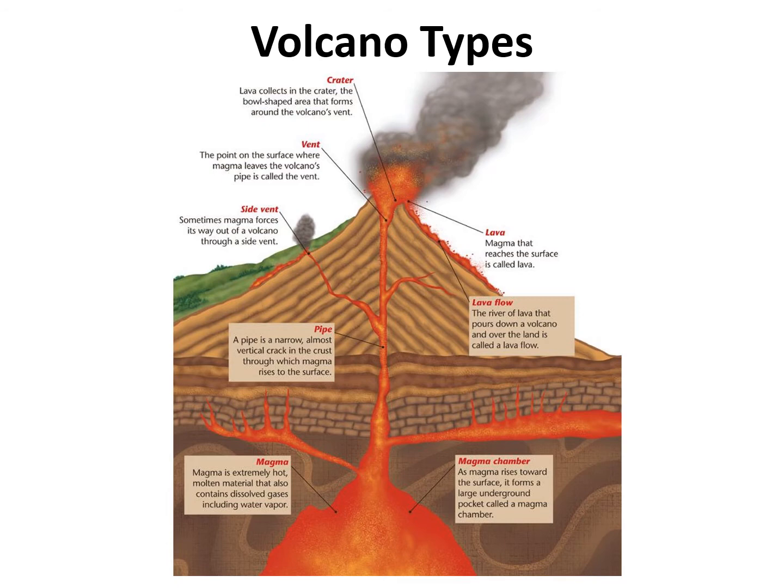No matter what type of volcano we're looking at, that expansion can cause a seismic wave to be generated. The seismic wave is what we feel on Earth's surface as an earthquake. Depending on how much magma is present and how wide and large the magma chamber is, you can feel either a very severe earthquake or a smaller one as the volcano is about to start erupting.